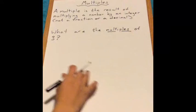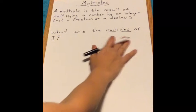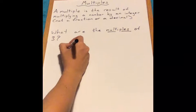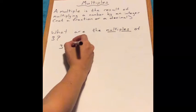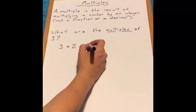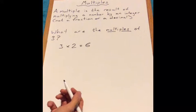Let's have a go with this question here. What are the multiples of 3? So 3 is the number we're going to be using and we'll multiply it by an integer. We'll do 3 times 2 which gives us 6. 6 is a multiple of 3.